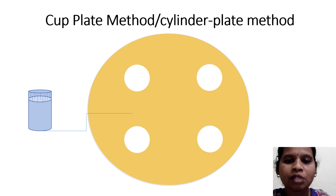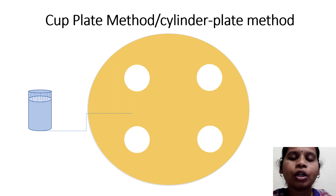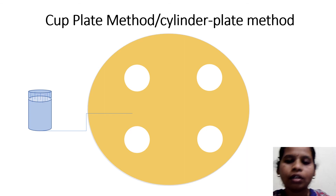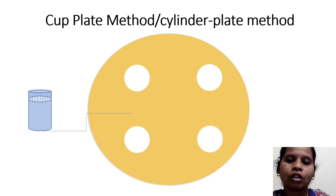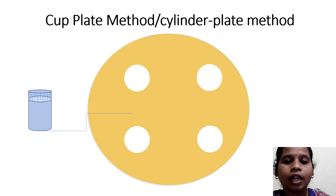We are then supposed to put the different concentrations of the antibiotic we are going to test — to check at what concentration it will inhibit the growth of the microorganism — and that concentration will be poured into the area.